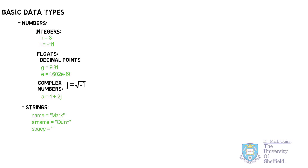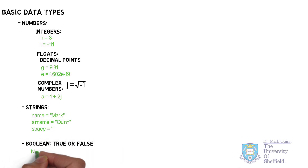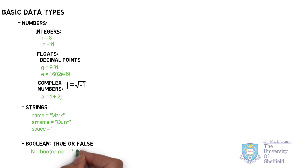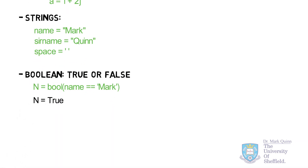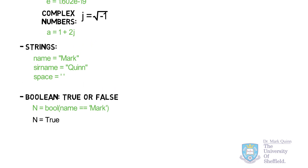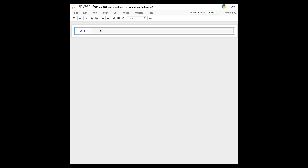The next data type may be slightly less familiar to you. This is a boolean data type, which can be either true or false. For example, we can test whether the variable name equals mark by calling the bool function, which evaluates the expression as true or false, and in this case it returns true. Before moving on, let's practice with these basic data types.